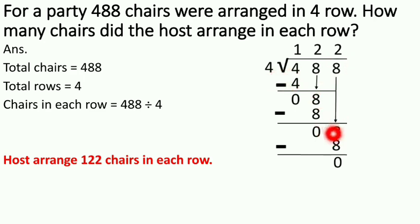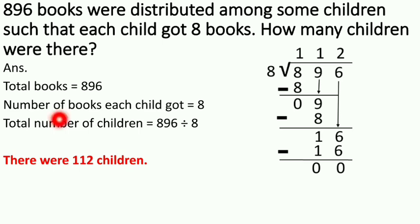Again 8 down as it is. 4 twos are 8. 8 minus 8 is 0. So what is our answer? 122. Host arranged 122 chairs in each row. See, look at here.